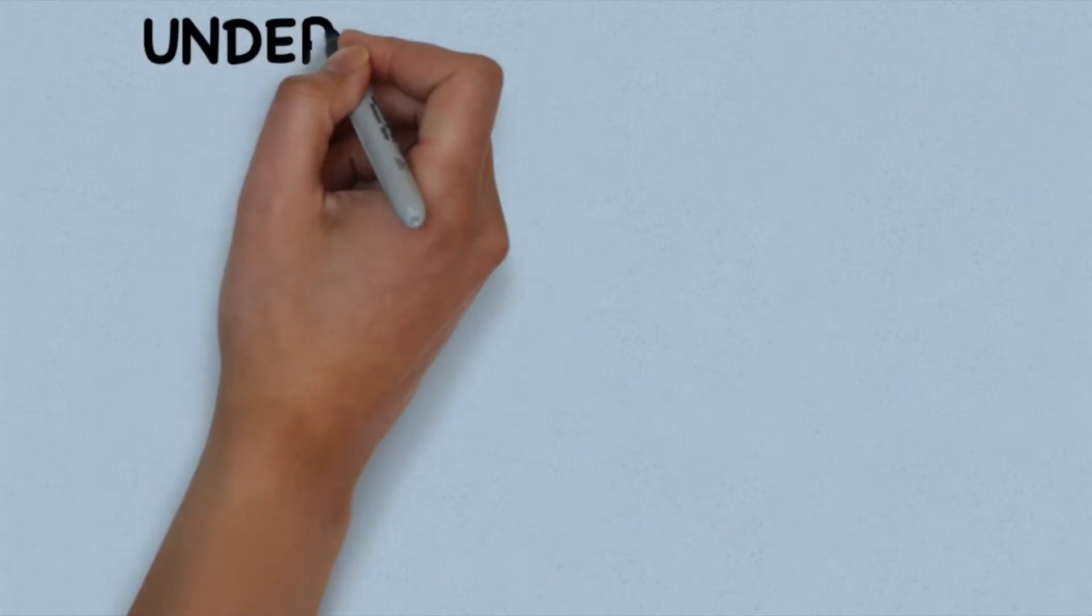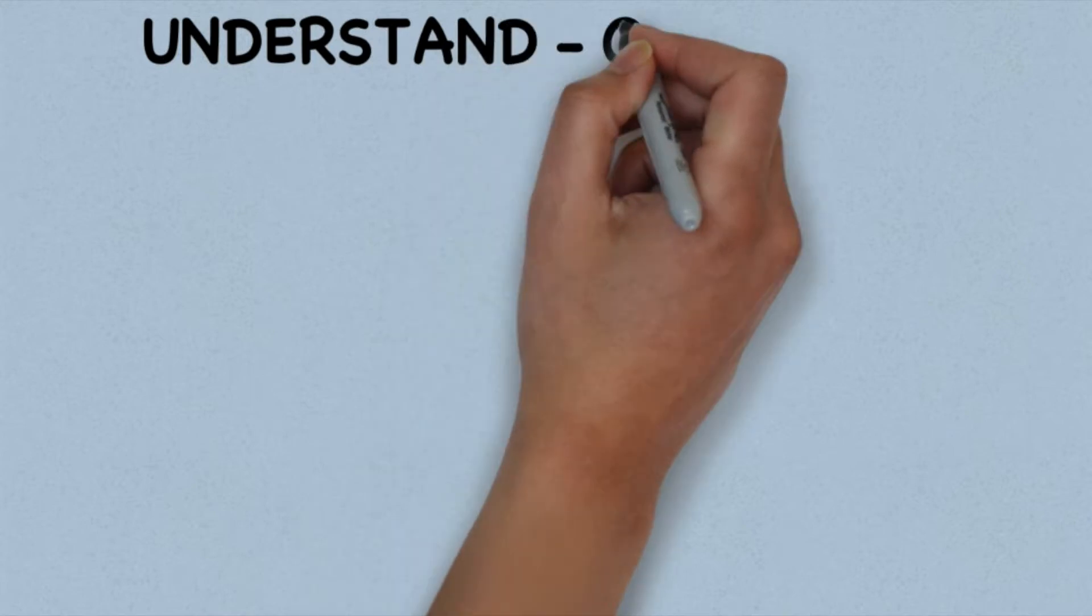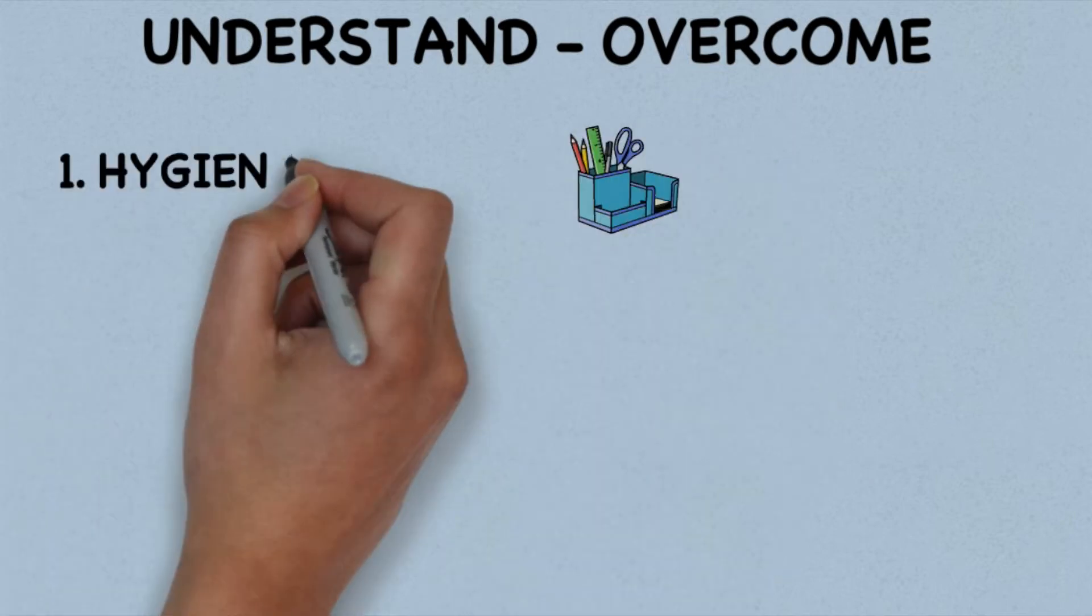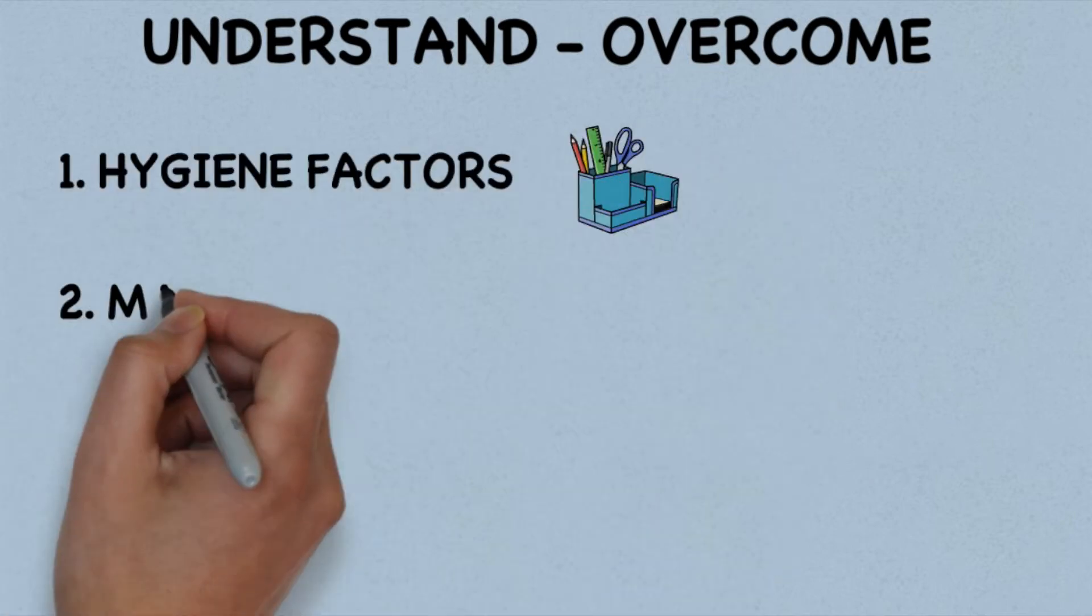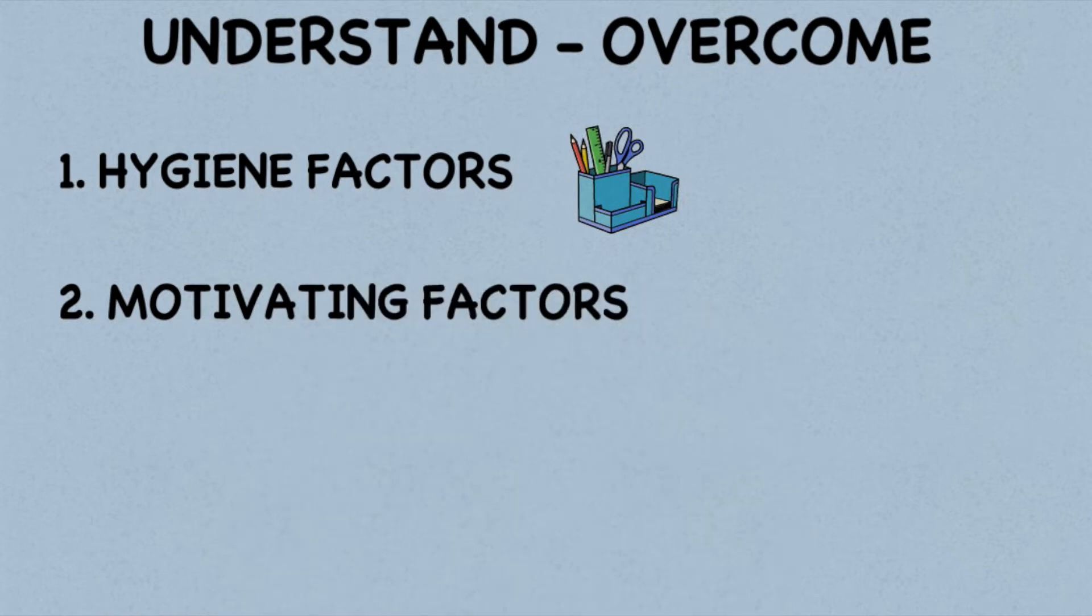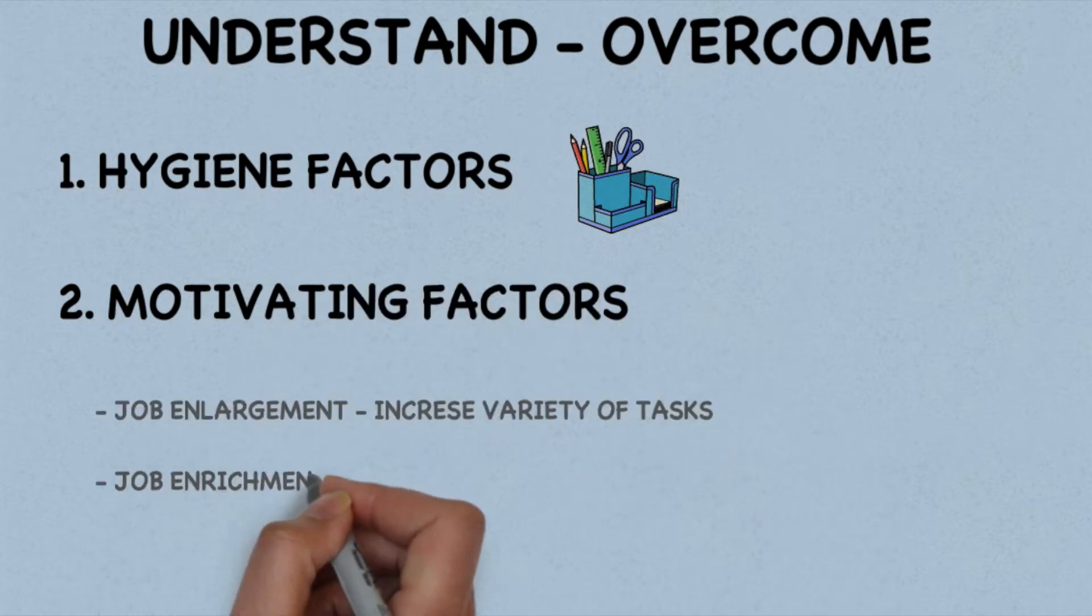Results can be achieved by understanding and overcoming these factors. Initially the hygiene factors should be outlined and improved. These can be unique to people. Once the hygiene factors have been improved, you can then move to the motivating factors. There are three main ways to do this.